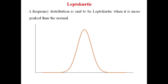Now we come to the leptocurtic curve. A frequency distribution is said to be leptocurtic when it is more peaked than the normal curve — more peaked. This is called a leptocurtic curve.